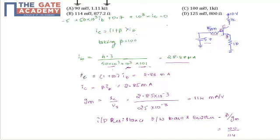So we have found out the IB value. Substituting the obtained value in this equation, we will obtain 2.88 milliamps.